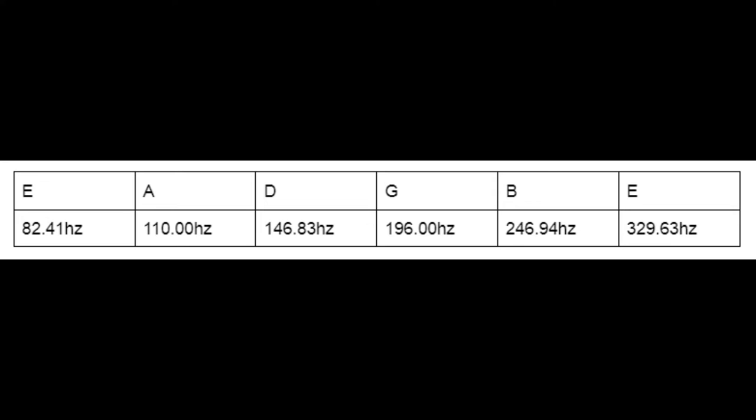we will use E standard tuning, E-A-D-G-B-E, from low frequency to high. If low E is 82.41 cycles per second, or hertz, the unit that frequency is measured in, then our desired frequencies are shown here. Fantastic.